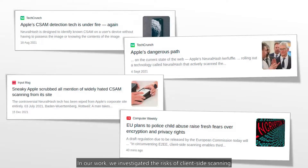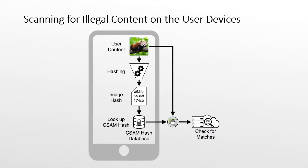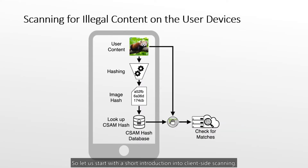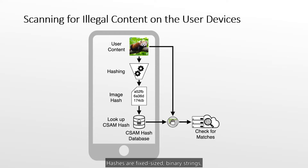In our work, we investigated the risks of client-side scanning from a technical machine learning perspective, in which NeuralHash acts as a real-life example. The basic idea of client-side scanning is to scan files for illegal content such as CSAM on the user device itself. Technically, for each file, a fingerprint or hash value is computed by a hashing algorithm. Hashes are fixed-size binary strings, which we represent in the equivalent hexadecimal form throughout this presentation.